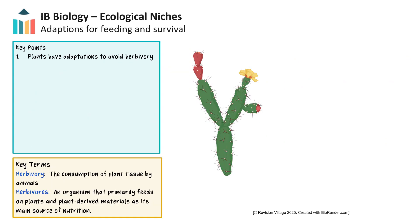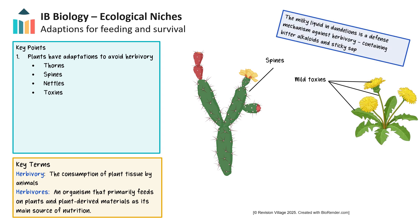Herbivory involves a plant and a heterotroph that consumes it, similar to predatory relationships. Plants have adaptations to avoid herbivory, such as thorns, spines, or nettles, to deter herbivores. Dandelion plants have several defense mechanisms, including milky, toxic bitter compounds in the leaves and flowers. Some plants, for example milkweed and nightshade, have highly toxic compounds which cause sickness or death in herbivores. Additionally, certain plants release chemical compounds that attract the predators of their herbivores — for example, corn can emit chemicals to attract wasps that kill worms feeding on their leaves.